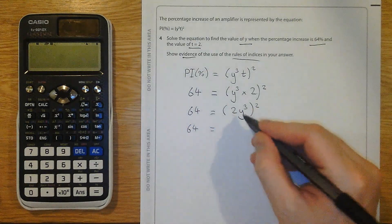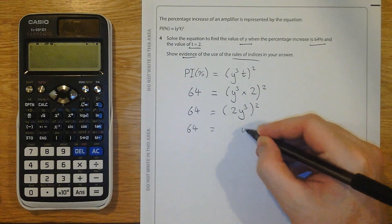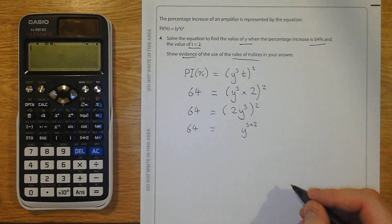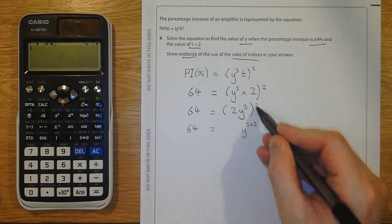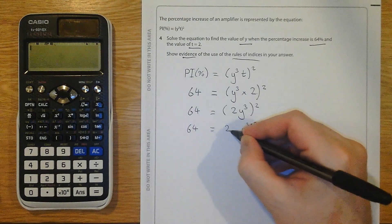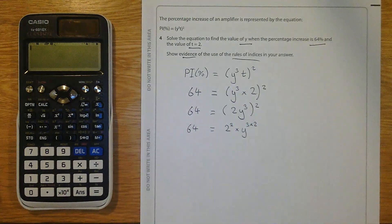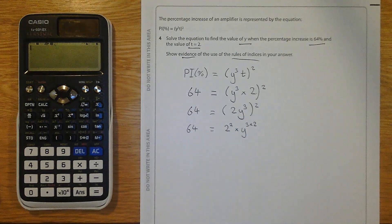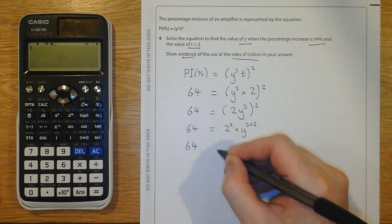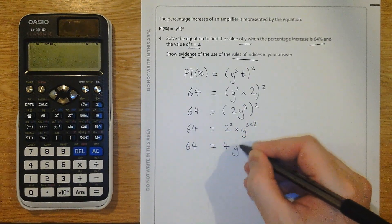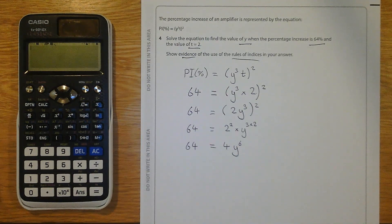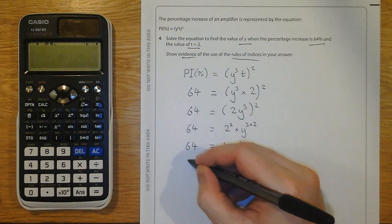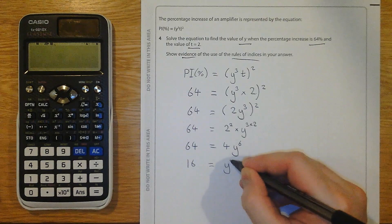Still all equal to 64. So, a lot of people know that this y with the power of 3, I'll multiply that. That's using one of my index laws. But people forget that the 2 also has the 2 applied to it. So this 2 is being squared, just like this 3 is being times by 2. Tidying that up, I get 4y to the power of 6. Now, I'm going to divide both sides by 4 to get 16 equals y to the power of 6.